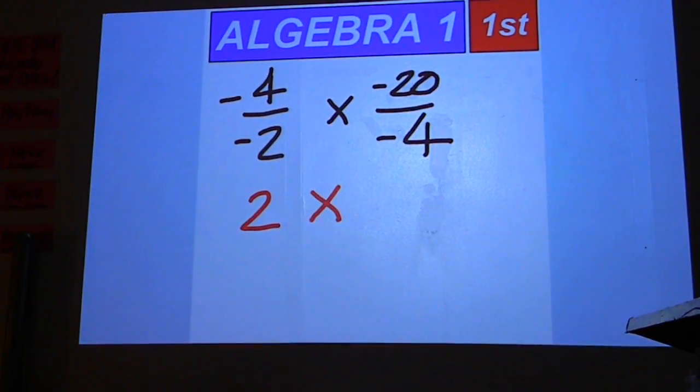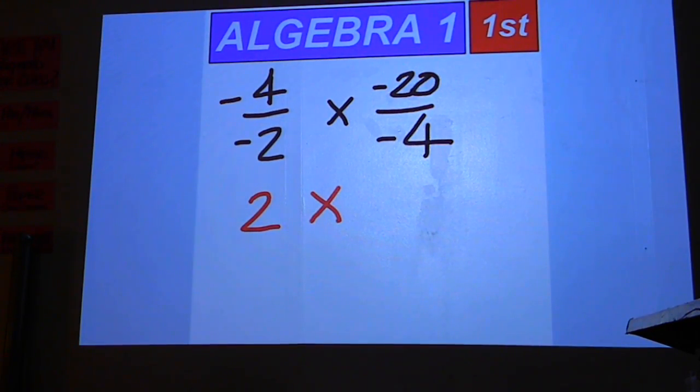Multiply that by the result of negative 20 over negative 4. Again, the signs are the same. Double negative, answer is positive. 20 divided by 4 is 5. Then 2 times 5 is 10 for your final answer.